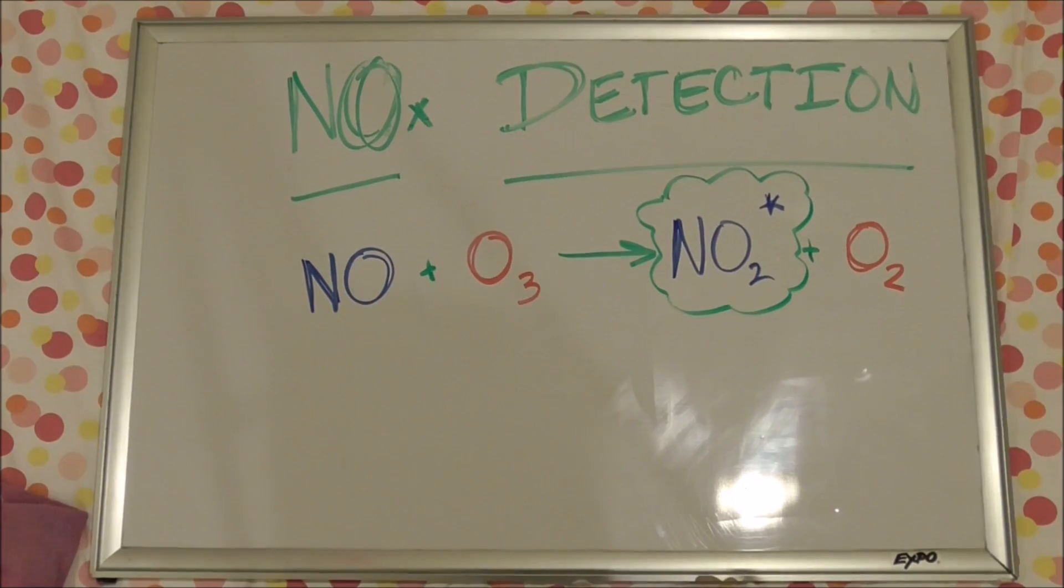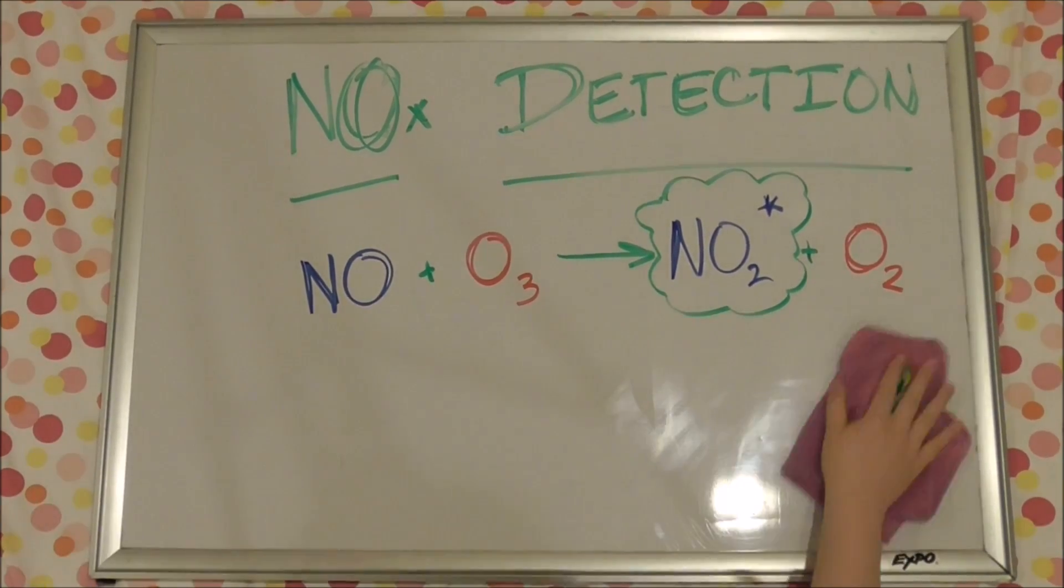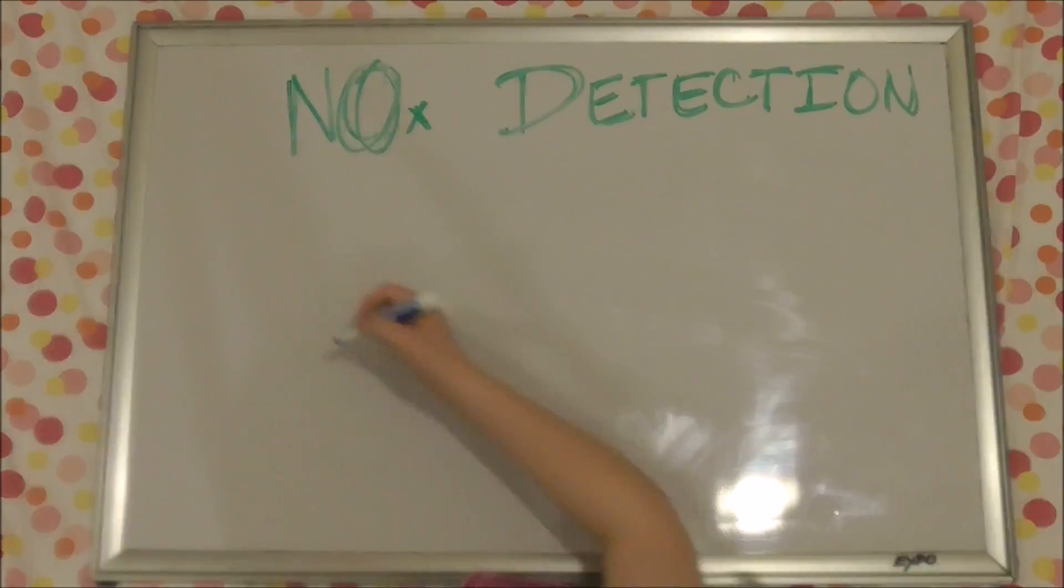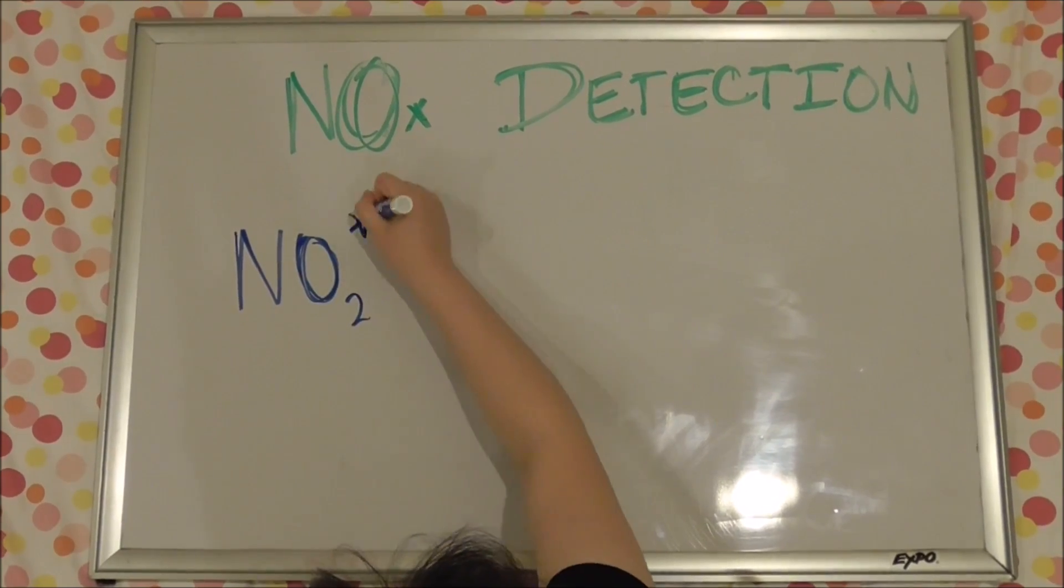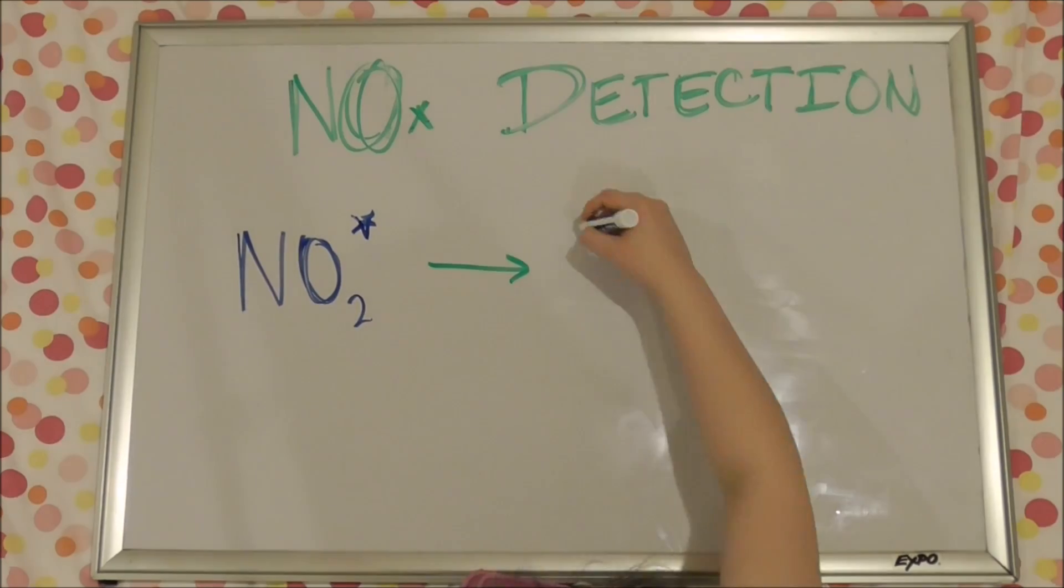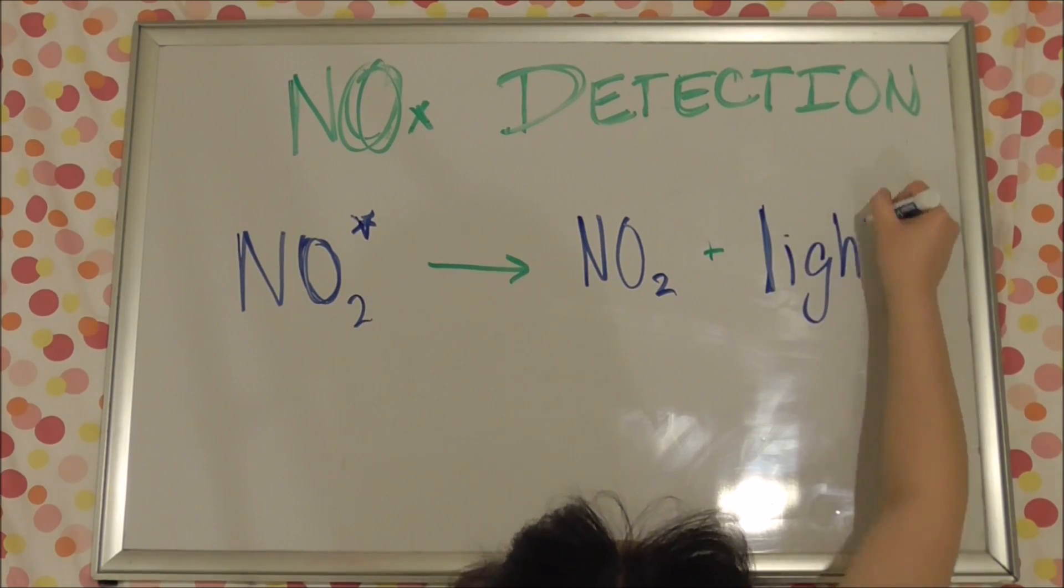What's important here is the NO2 molecule because it's in a high energy state. And so basically, the high energy NO2 molecule will go to a lower energy NO2 molecule and emit light at the same time.